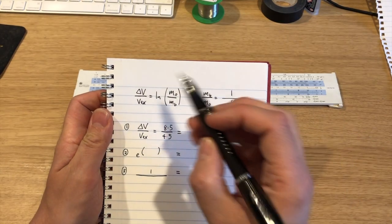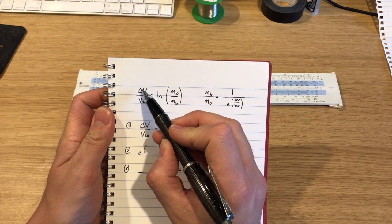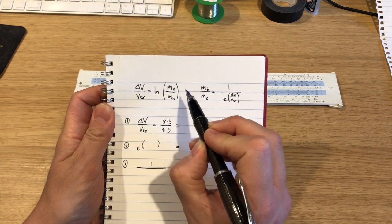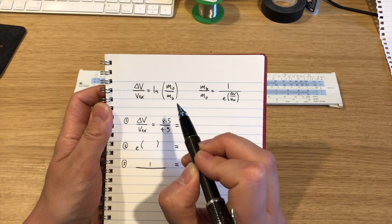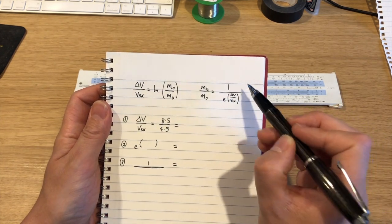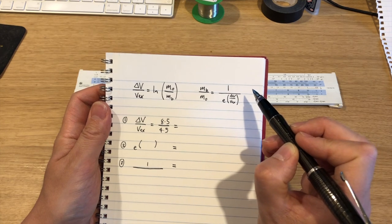Okay, so this is our rocket equation here. Total delta V, that's change in velocity of the rocket, divided by the exhaust velocity is equal to the natural log of the starting mass of the rocket divided by the burnout mass of the rocket. I can rearrange that into this useful form here for what we want to find out,